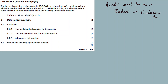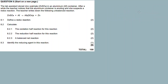Redox reactions involve electron transfer, while acids and bases involve proton transfer. These are the differences between the two types of reactions. In the description box I'll give you all the links for the questions.